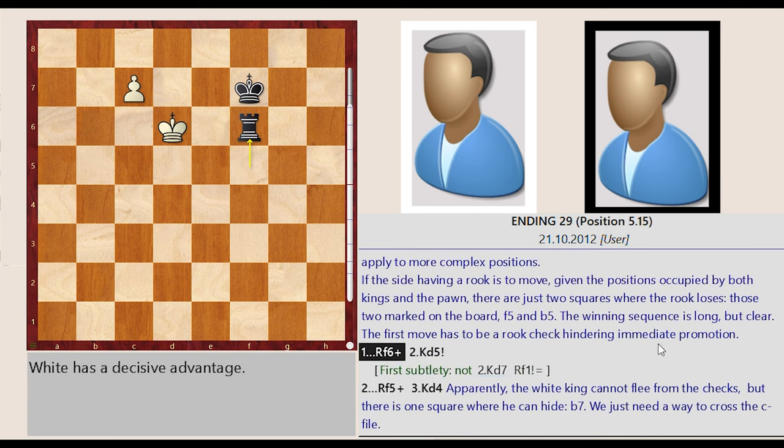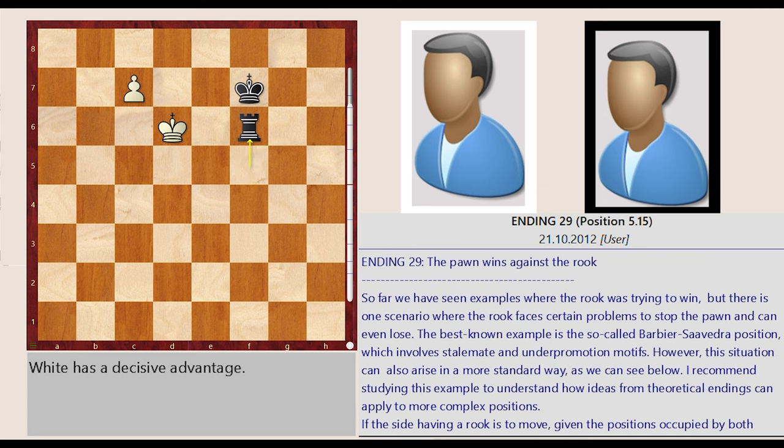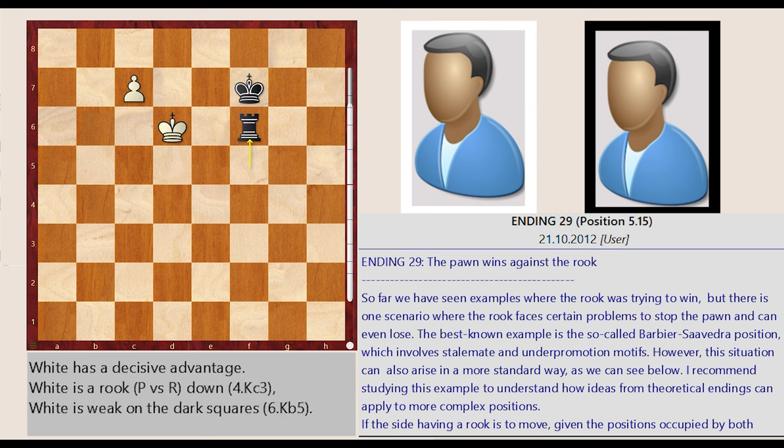Ending 29, the pawn wins against the rook. So far we have seen examples where the rook was trying to win, but there is one scenario where the rook faces certain problems to stop the pawn and can even lose. The best known example is the so-called Barbier-Saavedra position, which involves stalemate and under-promotion motifs.